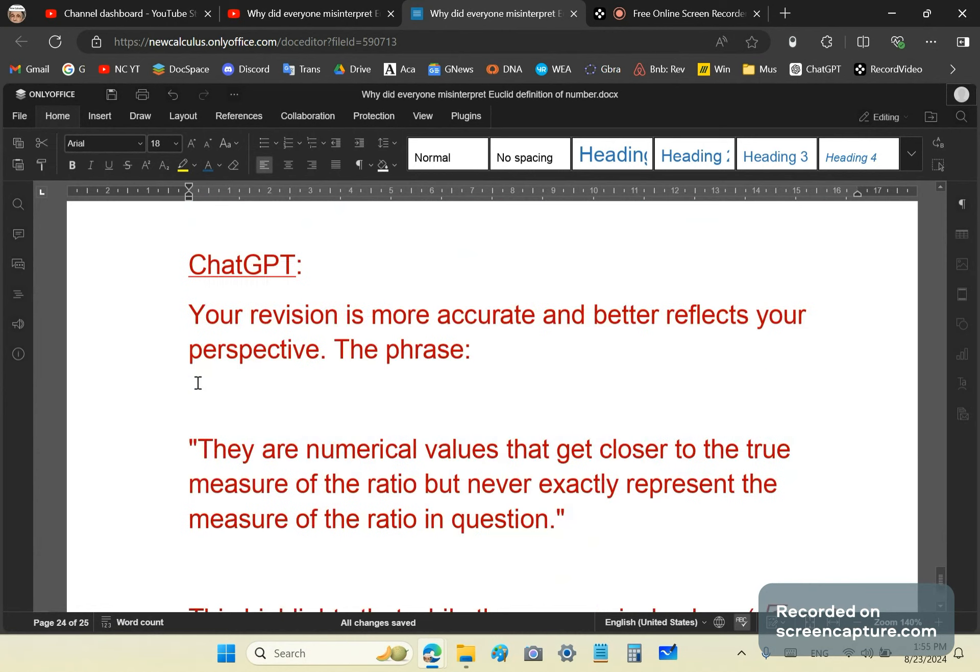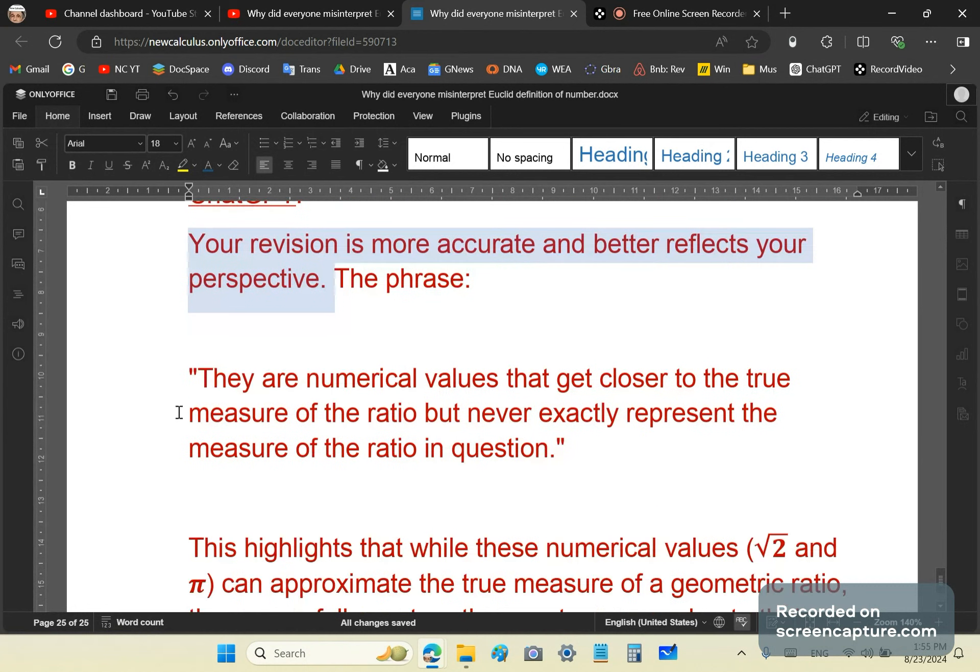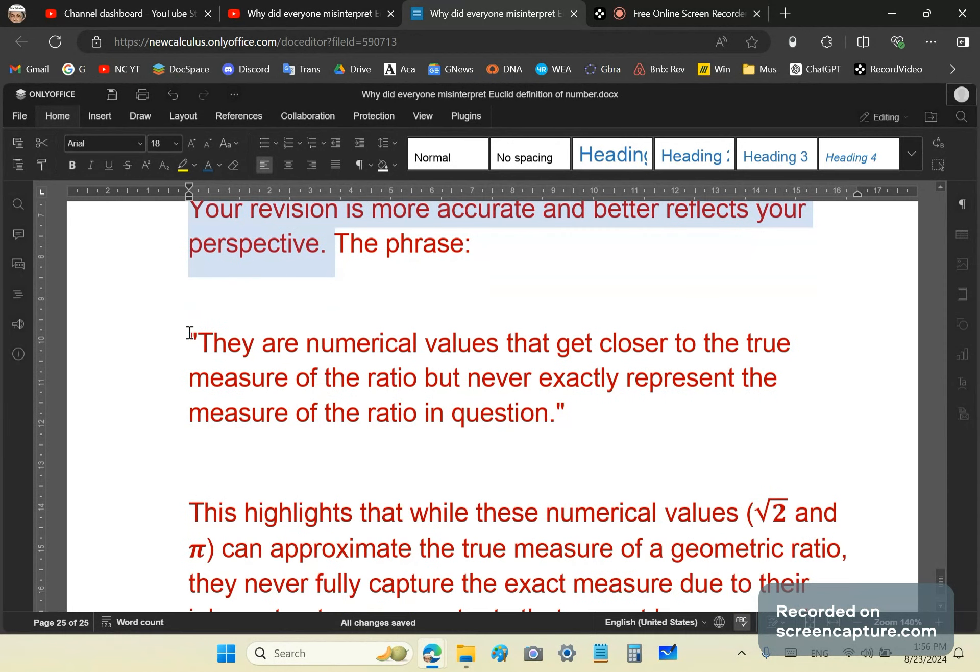And then, of course, ChatGPT tells me your revision is more accurate and better reflects your perspective. Actually, it better reflects the correct perspective, not mine, but the correct one, independent of my mind or any other mind. They are numerical values that get closer to the true measure of the ratio but never exactly represent the measure of the ratio in question. So that's pretty much it.